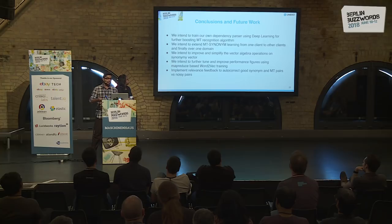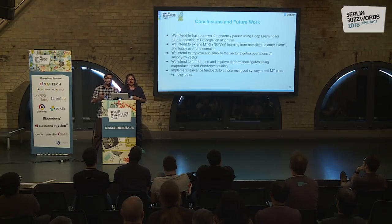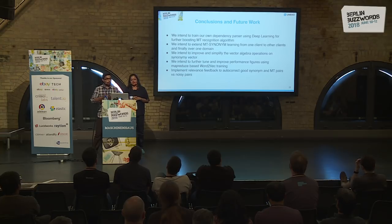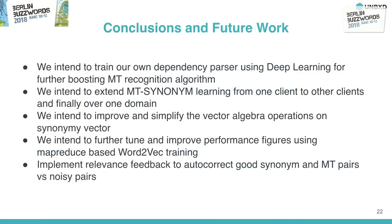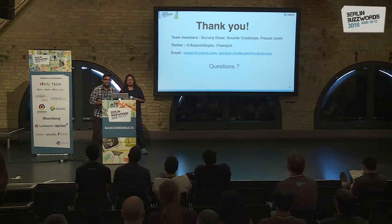For conclusions and future work: since the dependency parser sits at the core of must-have token generation, we want to train our own dependency parser using deep learning. We intend to extend the must-have token and synonym dataset across clients and domains. We also want to improve vector algebra operations — similar to how Mikolov established gender as a vector in embedding space, we want to define a synonymy vector. We plan to improve training times using MapReduce, and implement a feedback mechanism to auto-correct synonym and must-have token pairs by pruning noisy ones. Currently our accuracy is around 80%, and we want to push it toward 100%.